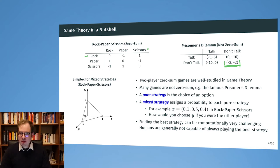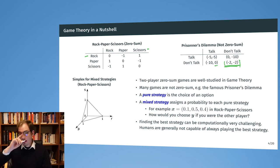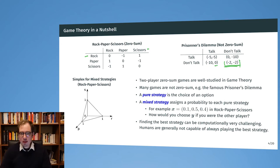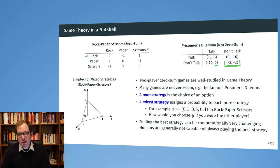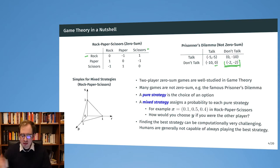If both robbers confess, both get five years in prison. The big question is: what should they do — talk or not? Obviously they cannot coordinate; each must think about his situation individually. We can think about the actions each takes as a discrete selection: either I talk or I don't talk, or I choose rock, paper, or scissors. But we can also think about so-called mixed strategies — simply probability distributions over the pure strategies.